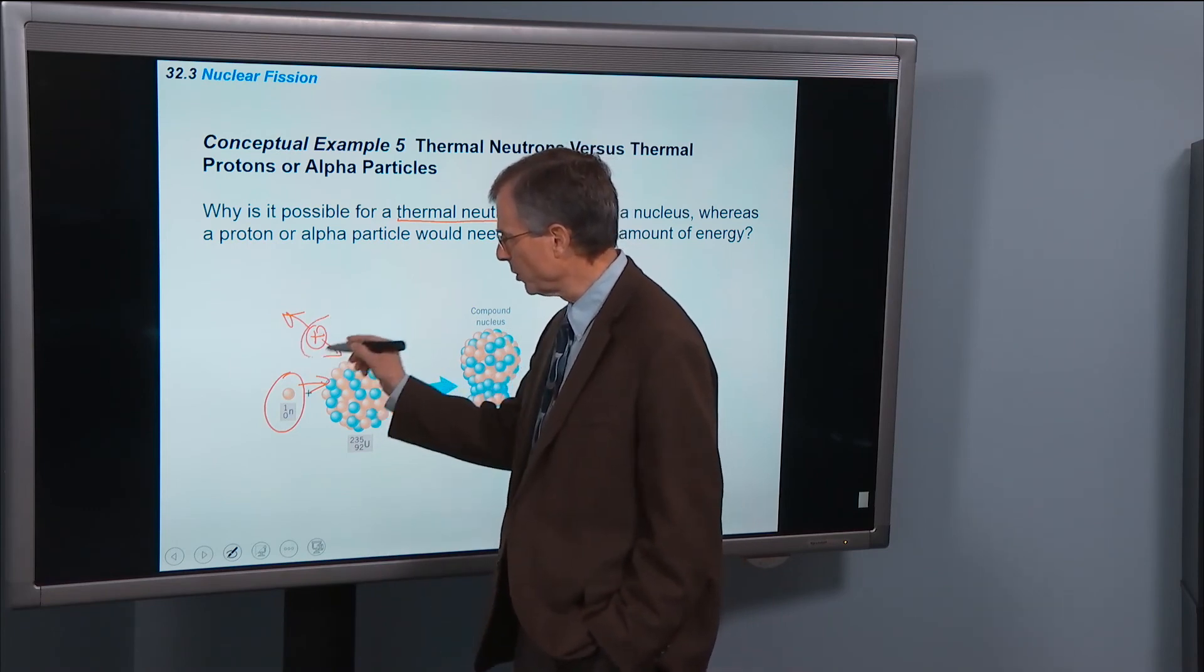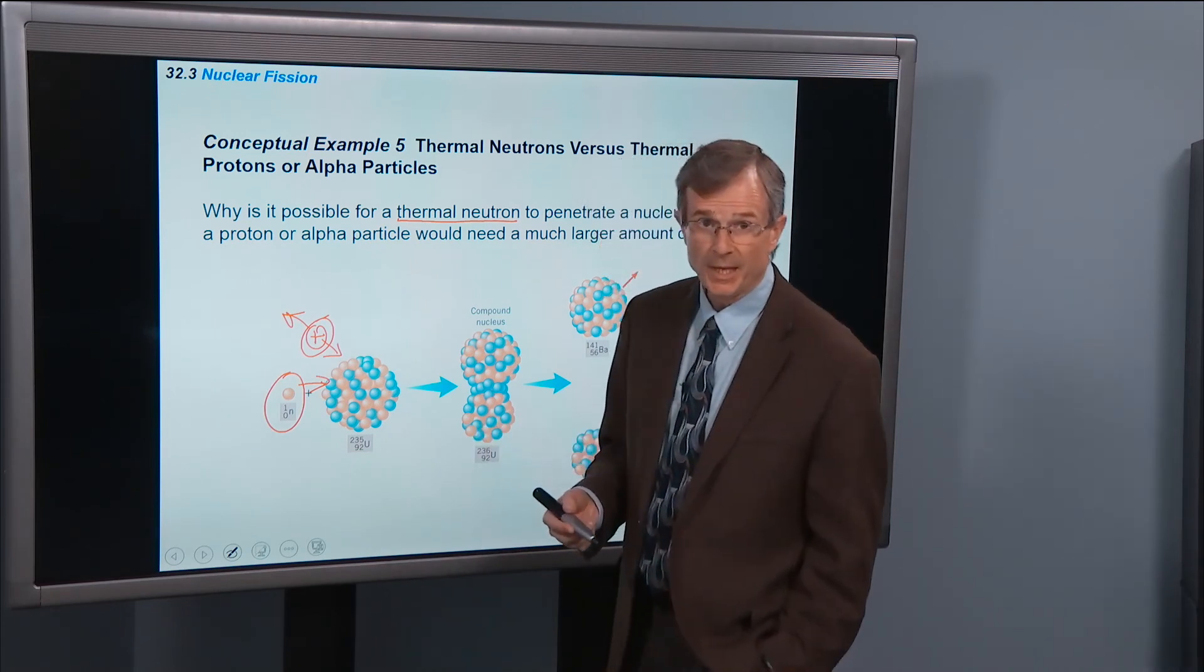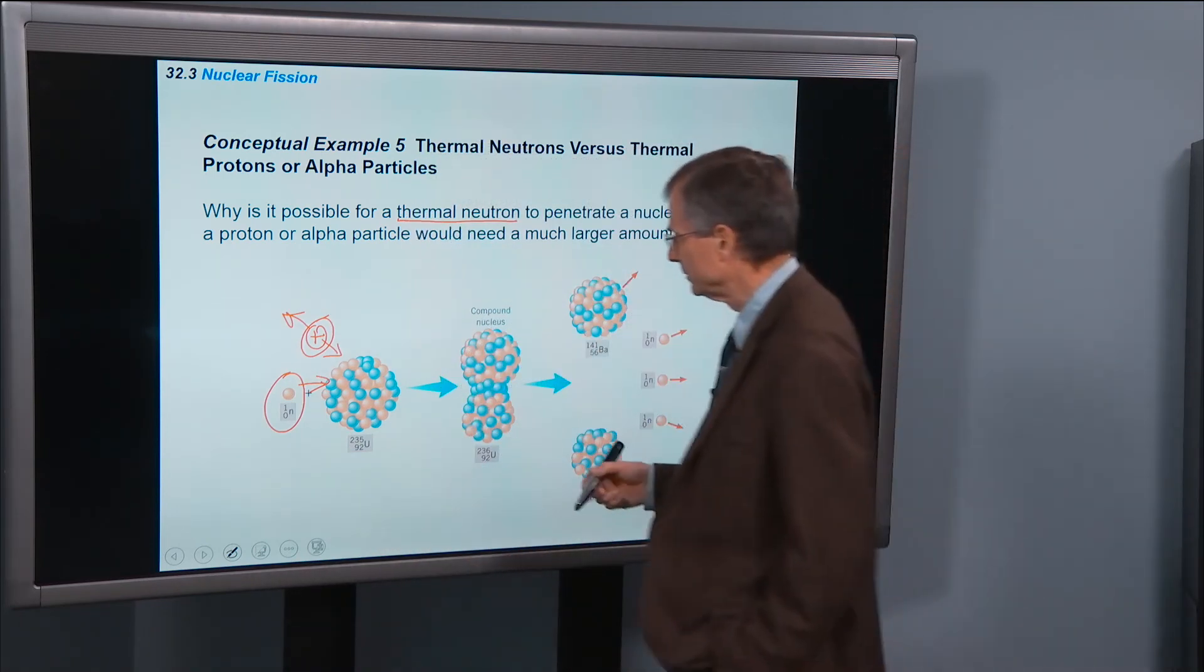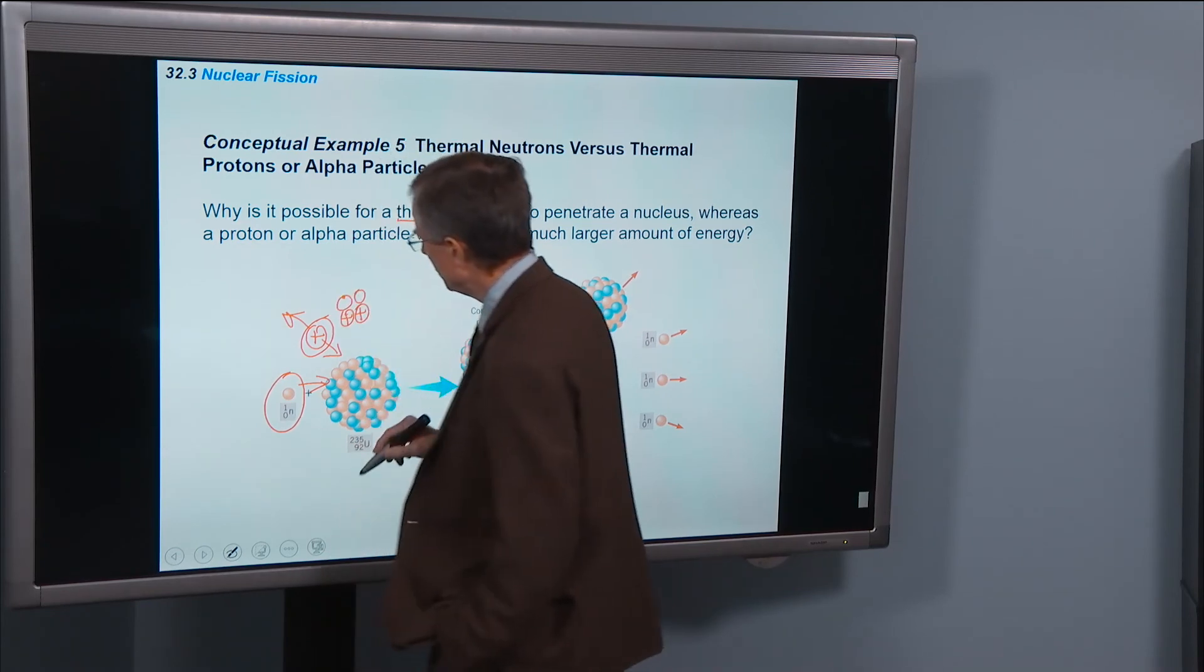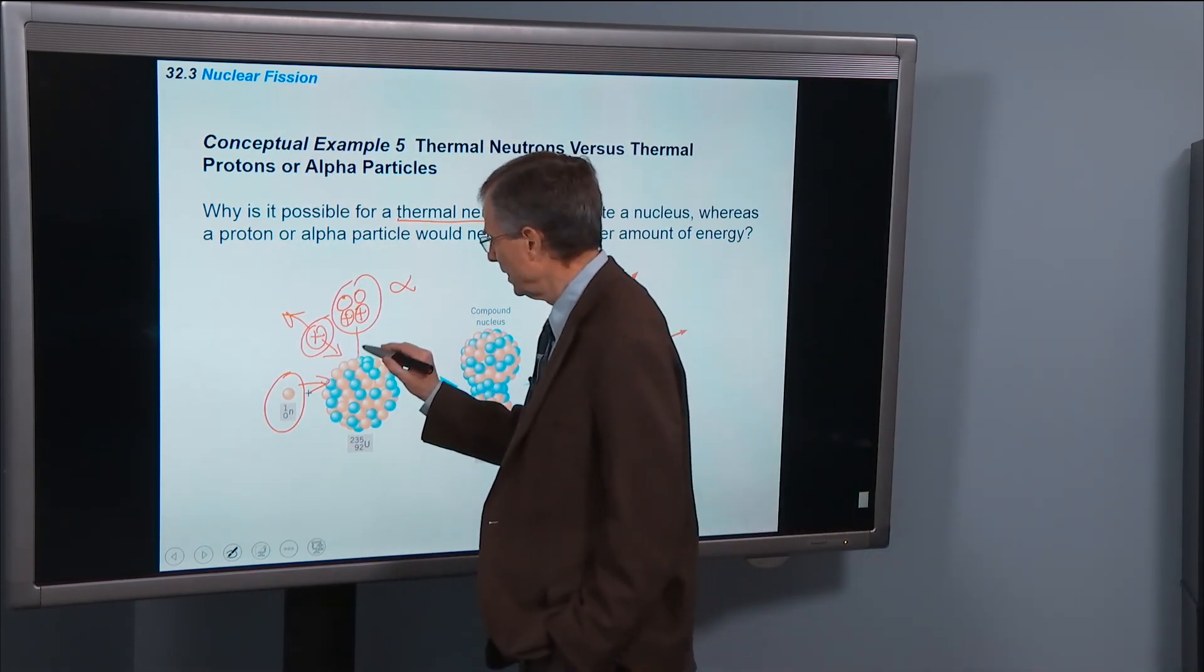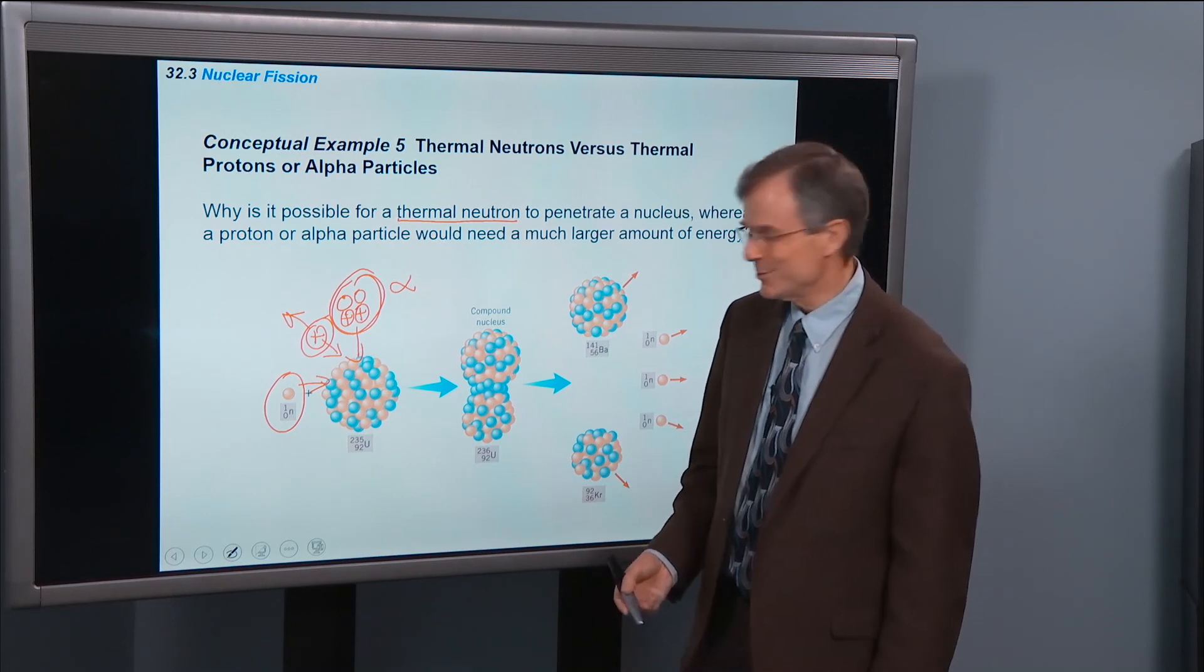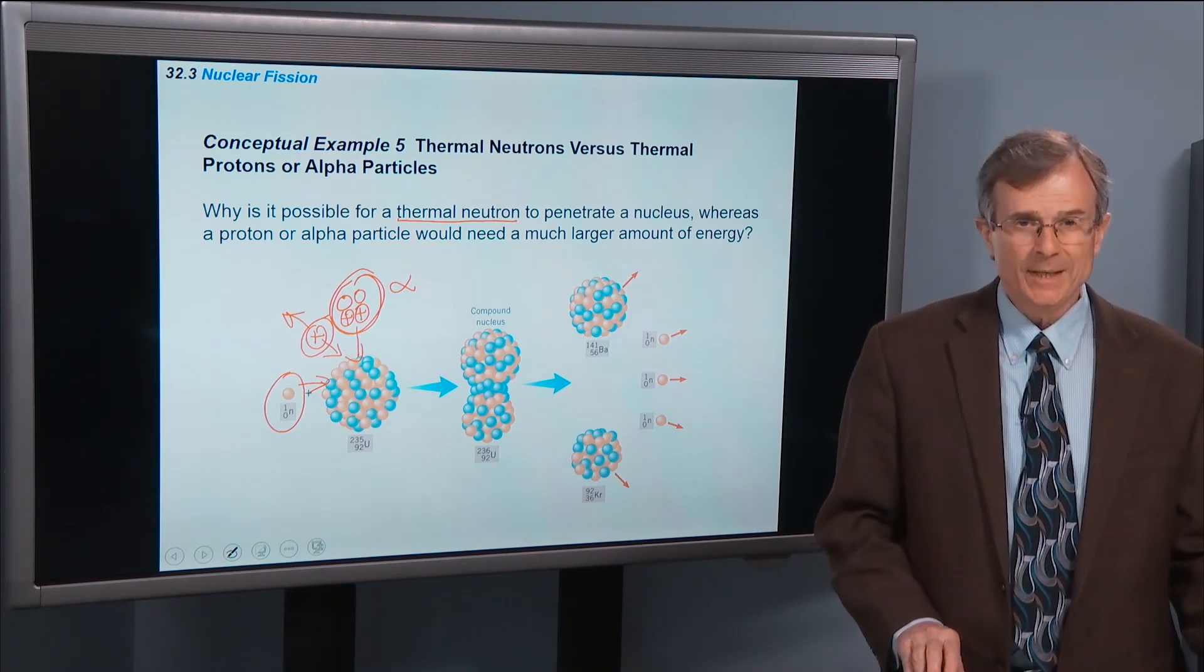Same thing for a helium nucleus, which is two protons and two neutrons, an alpha particle. Two protons and two neutrons makes a helium nucleus, which is an alpha particle. You send that toward this nucleus, the same problem as before. This alpha particle is positively charged and doesn't want to penetrate this uranium nucleus.